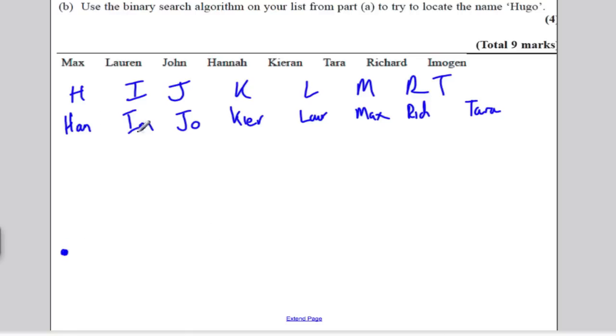Now I'm going to write down my workings over here. So I've got one, two, three, four, five, six, seven, eight, eight items. So the middle is the fifth, which is one, two, three, four, five, which is Lauren.